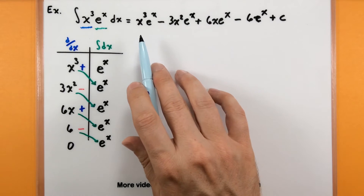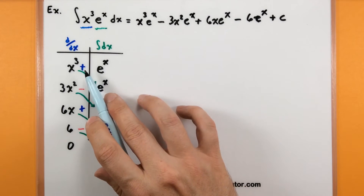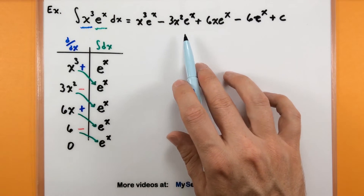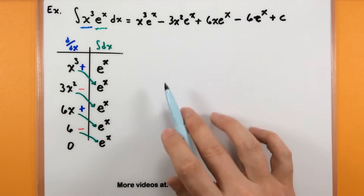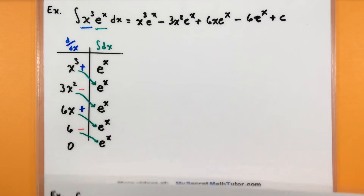Notice how we essentially did integration by parts — this was the u and the dv piece. We just did it over and over, and this table helped us keep track of that so we could immediately jump to the answer. Let's look at a different problem and see how this works one more time.